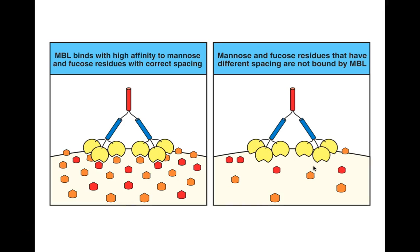Here we have an illustration of MBL attached to the surface of a bacterium. If we have lots of mannose and even mannose-like sugars like fucose on the surface of the bacteria, MBL is going to be able to very tightly bind and activate the production of C3 convertase. On the other hand, if the bacterial cell surface has very few sugars, MBL doesn't work as effectively. When bacterial cells have lots of sugars on their surfaces, MBL has a better chance of protecting us from those unwanted invaders.